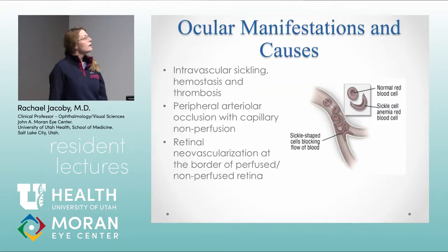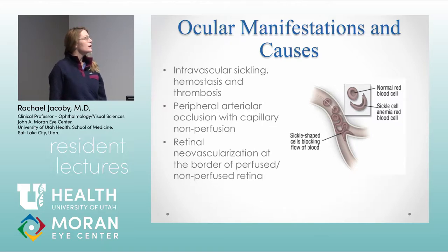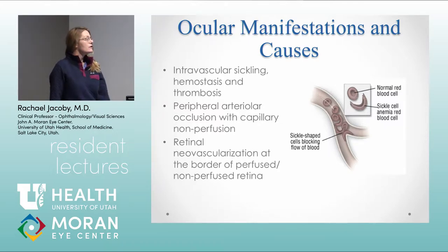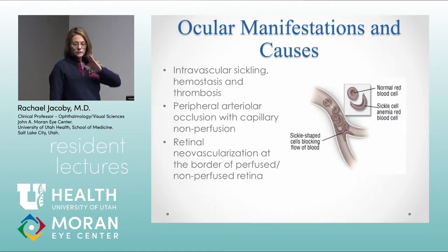In sickle cell disease, sickling of the abnormal red blood cells leads to thrombosis, peripheral occlusion, and non-perfusion, which then leads to retinal neovascularization at the border of the perfused and non-perfused retina.